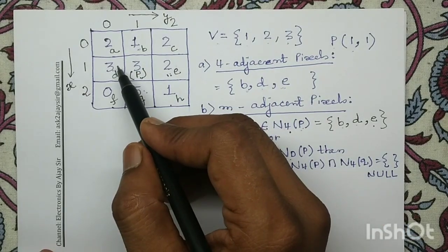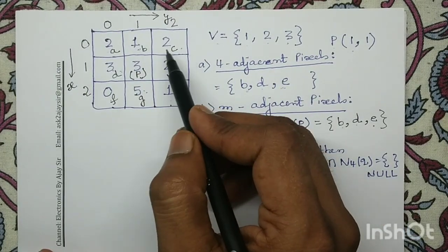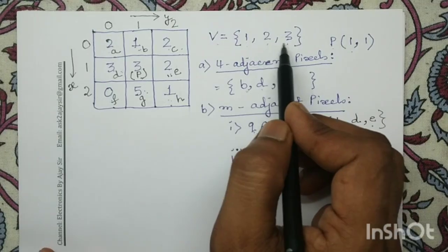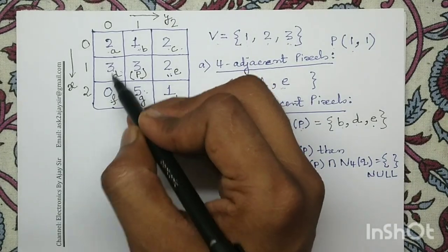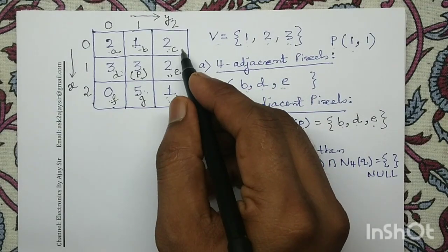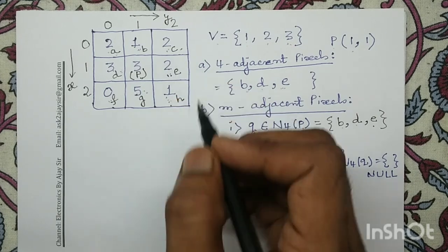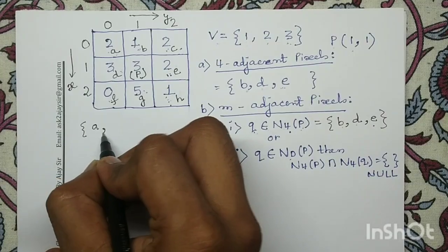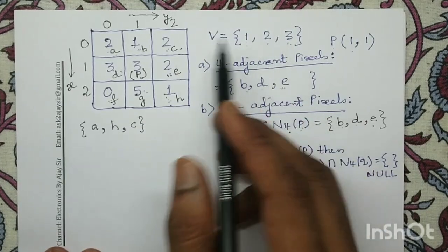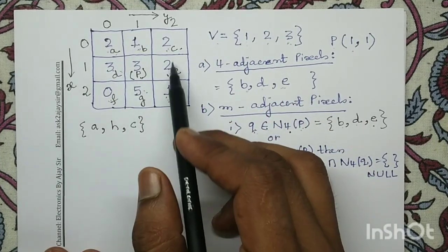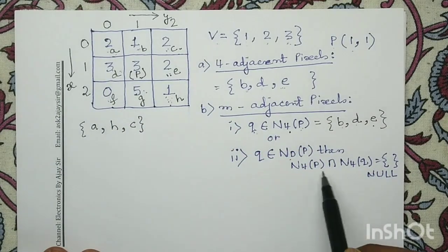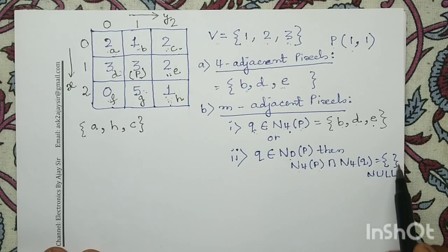Now we check the diagonal (ND) positions: pixels A, F, H, and C. Among these, we check which have intensity values 1, 2, or 3. Pixels A, H, and C have intensity values in the V set. Since A, H, and C are at diagonal positions, we must check whether N4(P) ∩ N4(Q) equals null for each.